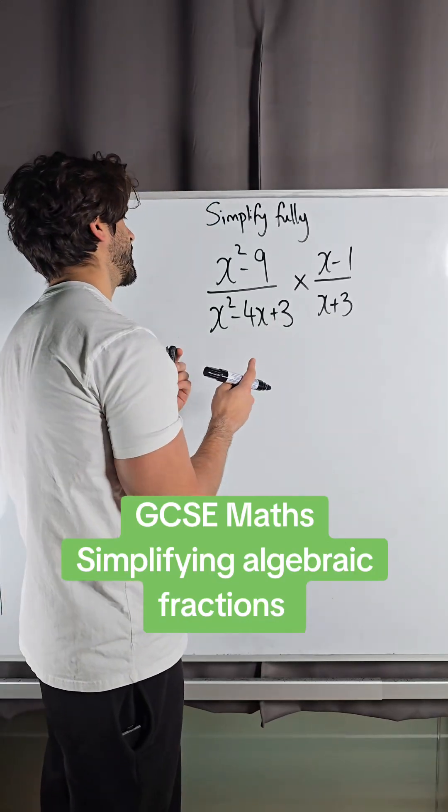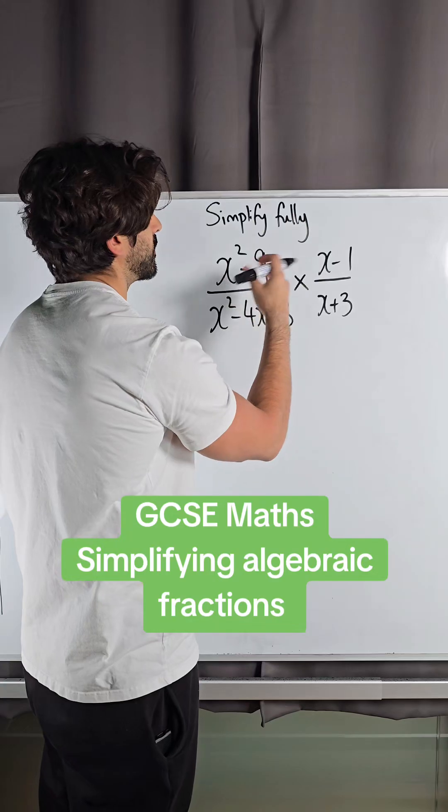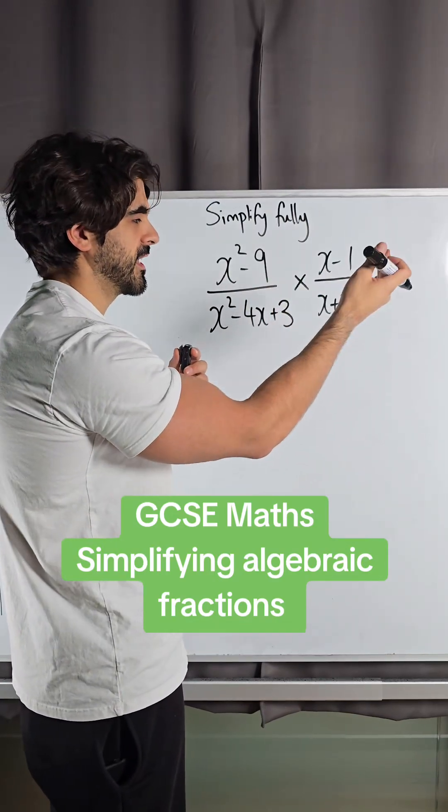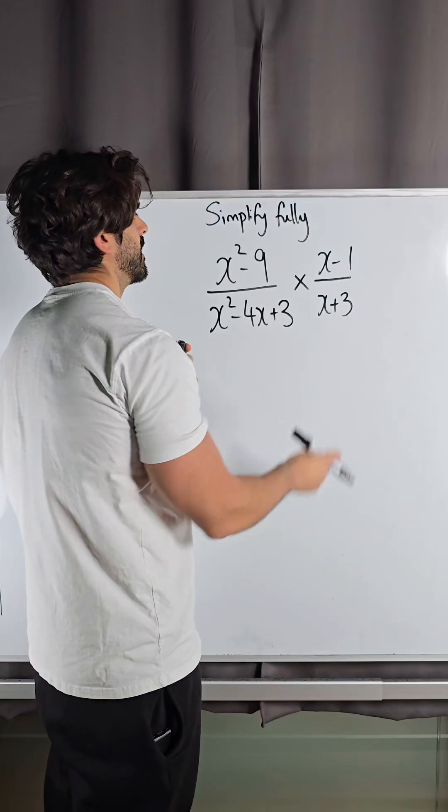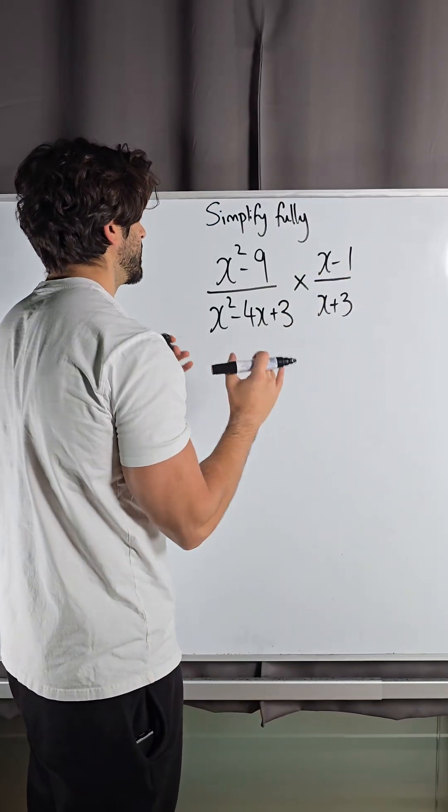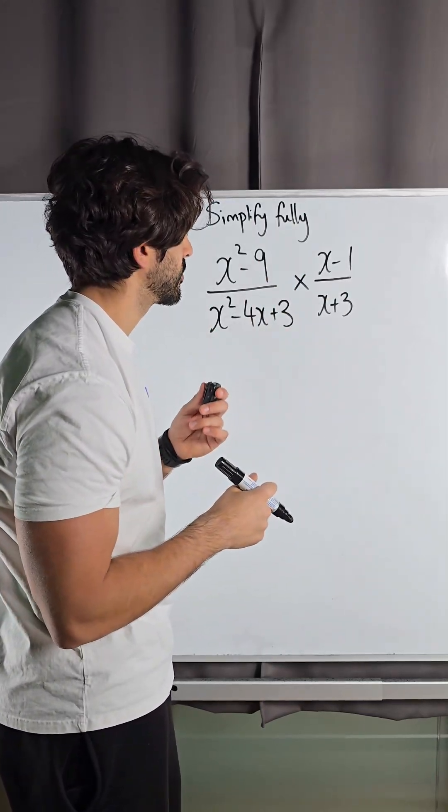How do we simplify these algebraic fractions nice and quickly? With multiplication or division, we need to rewrite things as multiplication and then we will cross cancel. If they were the same term, we could cross them out. So what we need to do is rewrite everything as multiplication and then we can cancel things out.